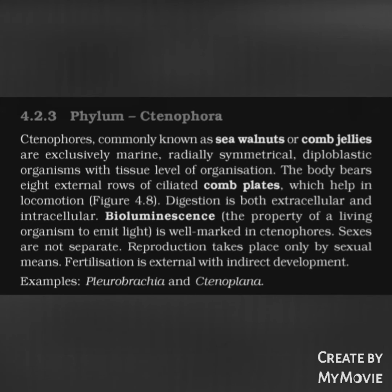Phylum Ctenophora: Ctenophores, commonly known as sea walnuts or comb jellies, are exclusively marine, radially symmetrical, diploblastic organisms with tissue level of organization. The body bears eight external rows of ciliated comb plates which help in locomotion. Digestion is both extracellular and intracellular. Bioluminescence — the property of living organisms to emit light — is well marked in ctenophores. Sexes are not separate. Reproduction takes place only by sexual means. Fertilization is external with indirect development. Examples: Pleurobrachia and Ctenoplana.